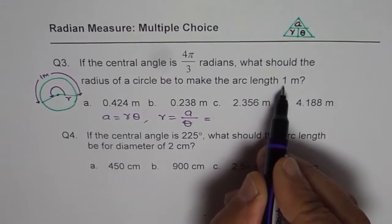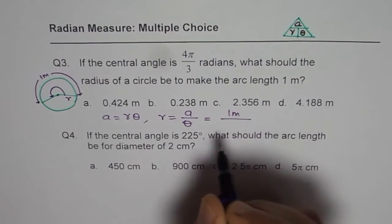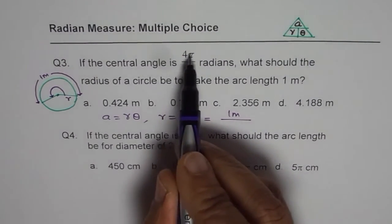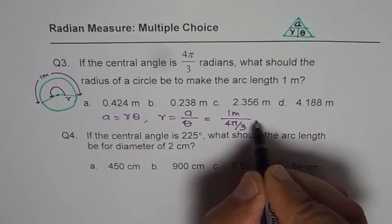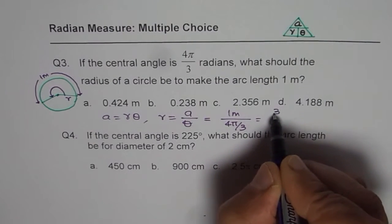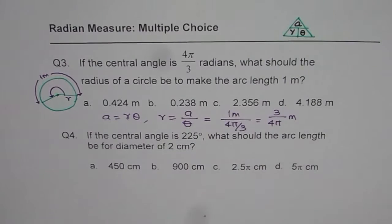Now arc length is given to us in meters, 1 meter, let us write 1 meter here, and the angle is in radians 4 pi by 3, so divided by 4 pi by 3, which is as good as writing 3 over 4 pi meters. So that is the exact value.